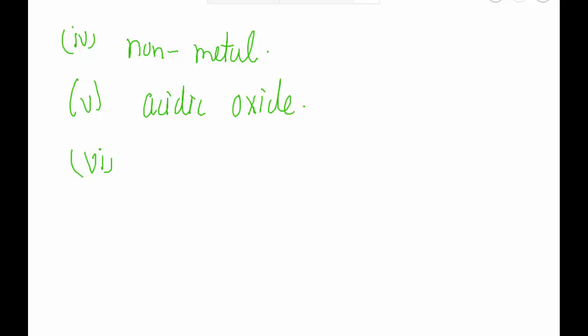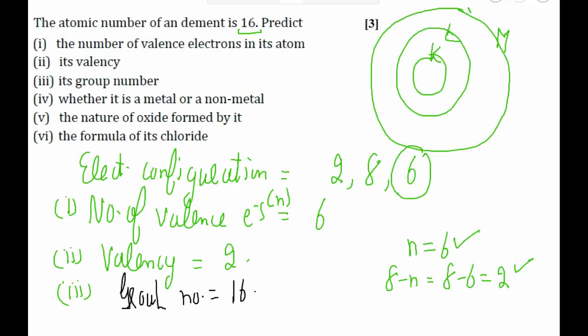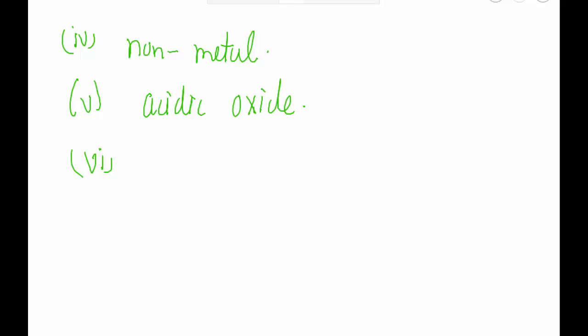The sixth part: we have to predict the formula of its chloride. Let's say the element is X and the other element is chlorine. For X we have just seen that the valency is 2, and for chlorine we know that the valency is 1. While calculating the formula, we simply criss-cross these valencies. 1 will go under X and 2 will go under chlorine. Hence the formula of chloride in this case is XCl2.